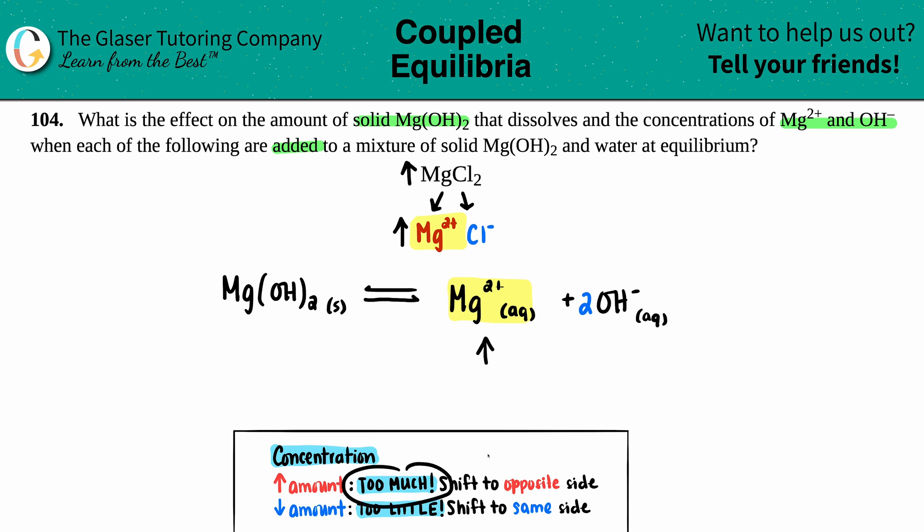So when you have too much of aqueous Mg2+, you always shift to the opposite side. So if you're increasing over here, you're favoring going in the reverse direction.